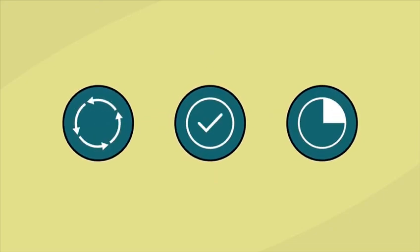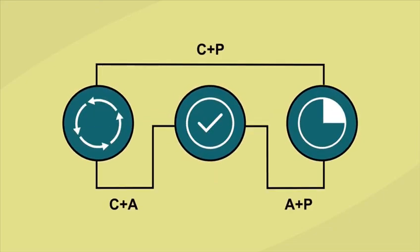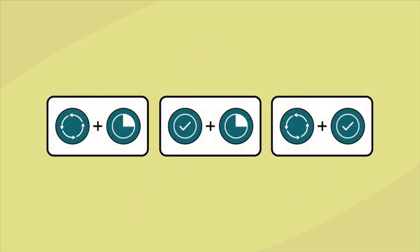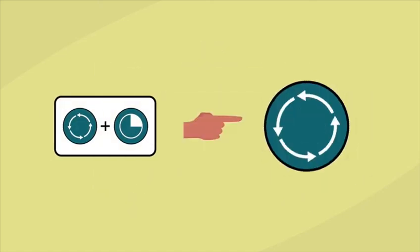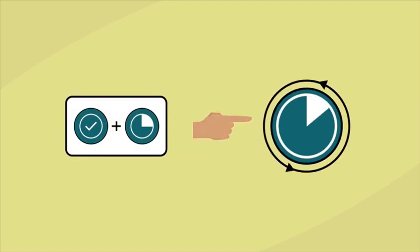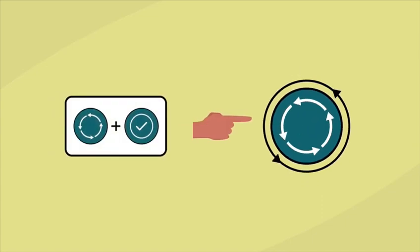The CAP theorem states that a distributed system can only provide two of those three properties simultaneously. That means we have three choices for our distributed system. The system can be consistent and partition-tolerant, available and partition-tolerant, or consistent and available.